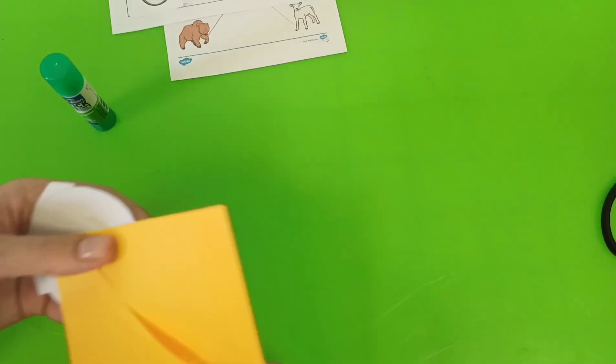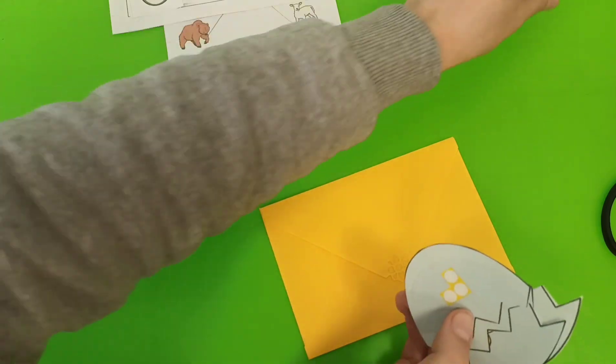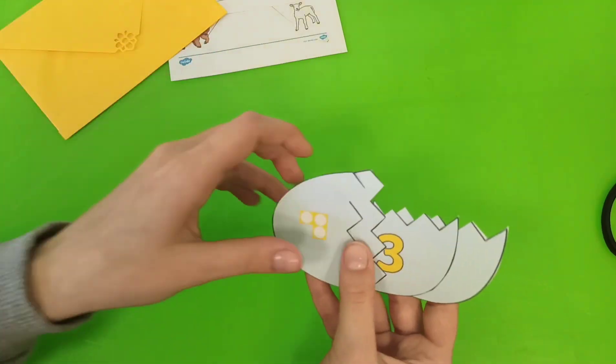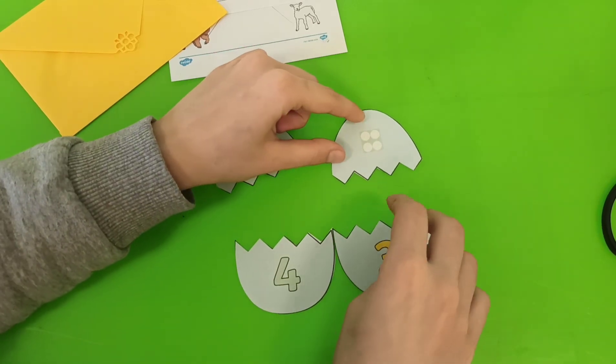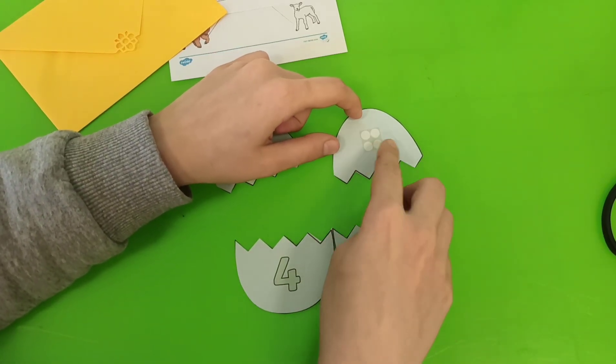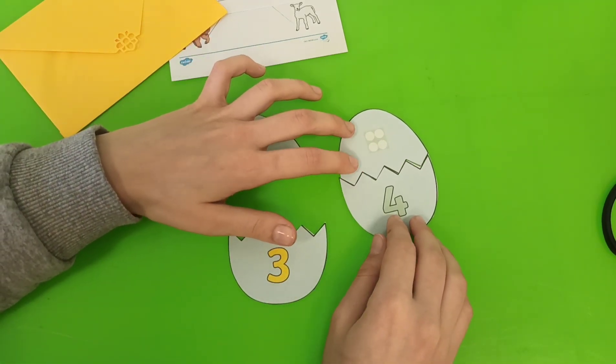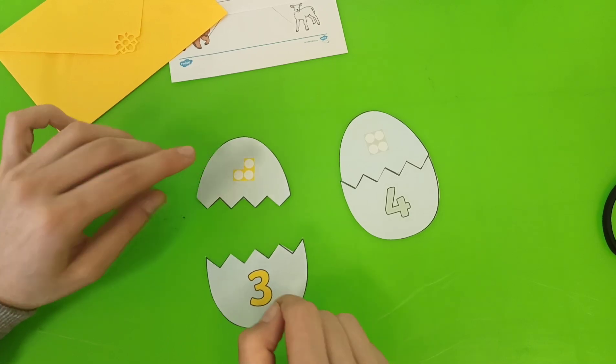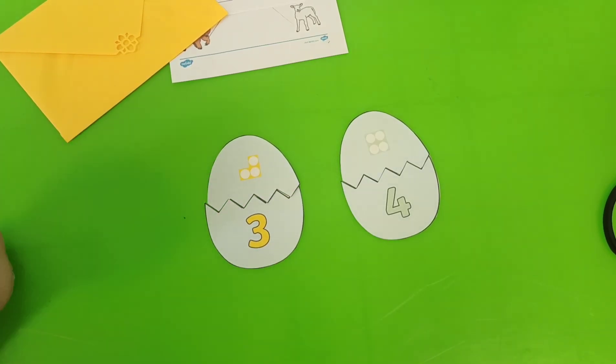Now, we have an envelope with parts inside. We need to put and count. How many dots are here? One, two, three, four. We need to look for number four and put them together. Now let's count here. One, two, three. Here we have three. Put together.